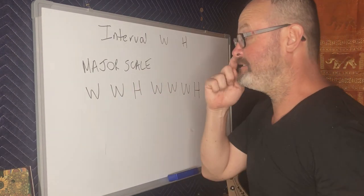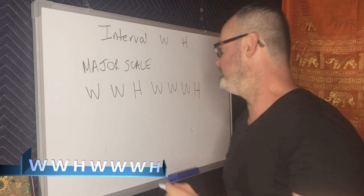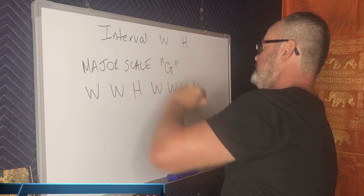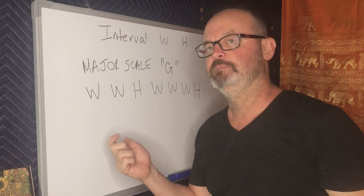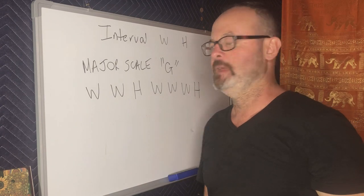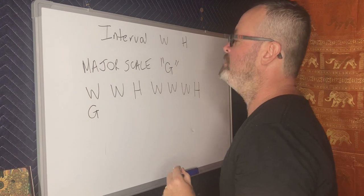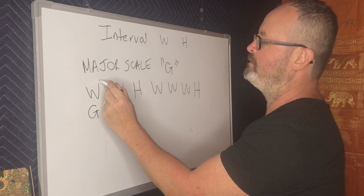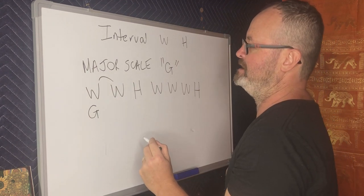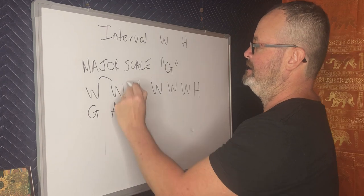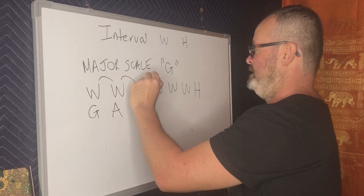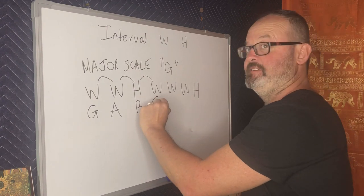Let's take the key of G, for instance, and let's see what notes belong to the key of G. We start off with G, which is our first note. And then if it's a whole step to go to our second note, there's an A, whole step again. There's a B, half step gives us a C.